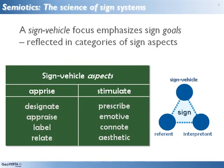Turning the sign relationship clockwise brings the sign vehicle into focus and emphasizes the many aspects of reference that sign vehicles can signify. One major distinction is among sign vehicles that apprise or let the user know about something, versus those that stimulate some behavior or other reaction. For example, a shield with an 8 on a highway map will designate that the road is Interstate 8, while the same map might use a sunny yellow color to both designate a highway as a scenic route and to stimulate drivers to use it by connoting how pleasant their travel would be.